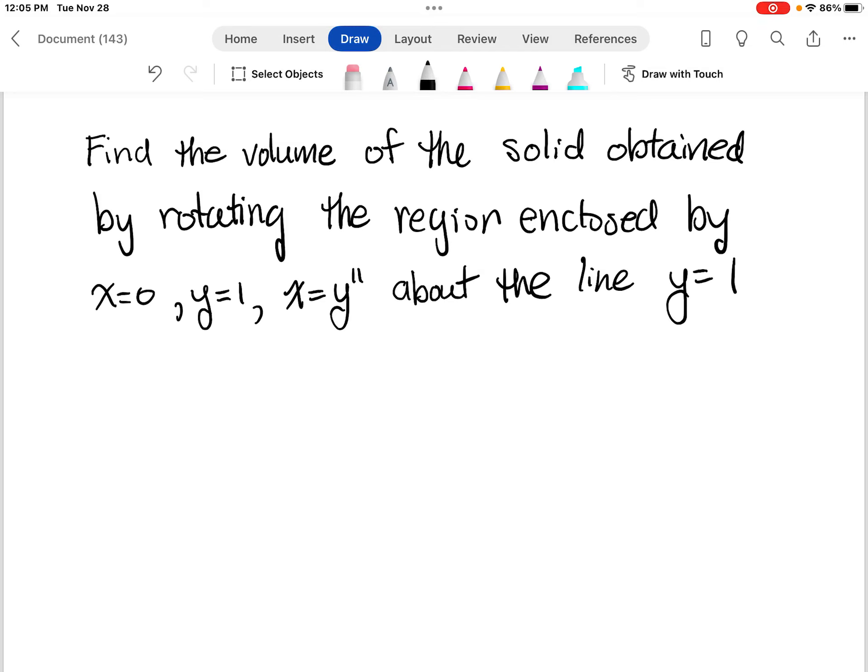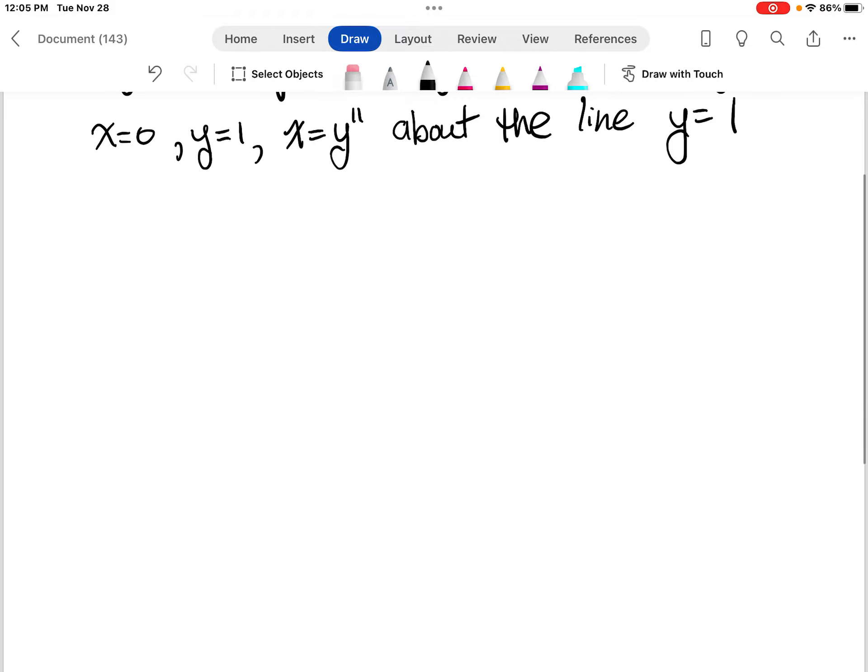Find the volume of the solid obtained by rotating the region enclosed by x equals 0, y equals 1, and x equals y to the 11th, and we're going to rotate it about the line y equals 1.